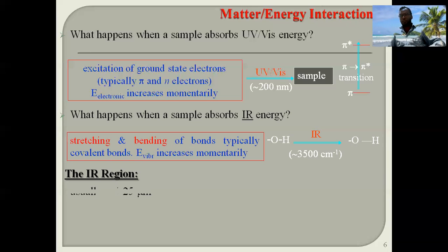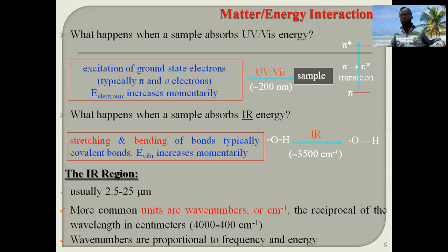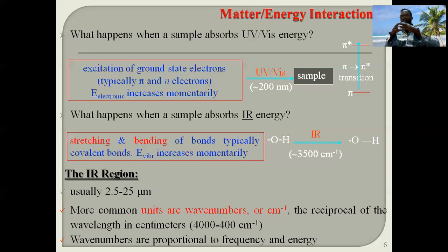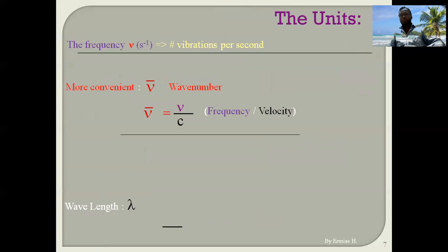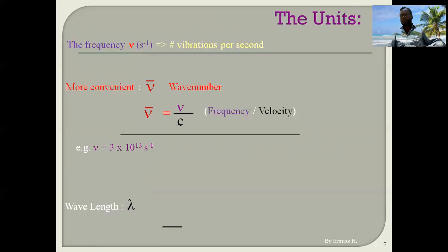The IR region spans from 2.5 to 25 micrometers. The units of IR are commonly expressed as wavenumbers or cm⁻¹, existing between 4000 and 400 cm⁻¹. IR can be expressed by frequency, wavenumber, or wavelength, but is most commonly expressed by wavenumber.